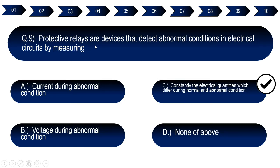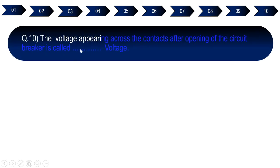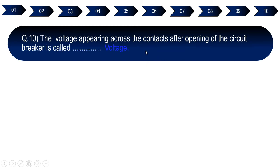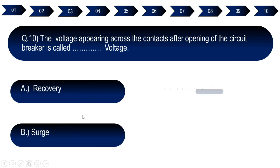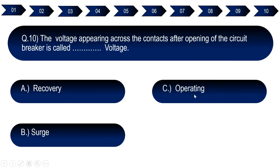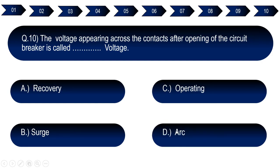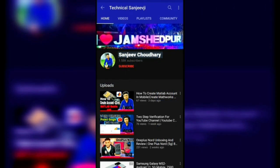Question number ten: The voltage appearing across the contact after opening of the circuit breaker is called dash voltage. Option A: recovery. Option B: surge. Option C: operating. Option D: arc. The right answer for question number ten is option A — recovery voltage.